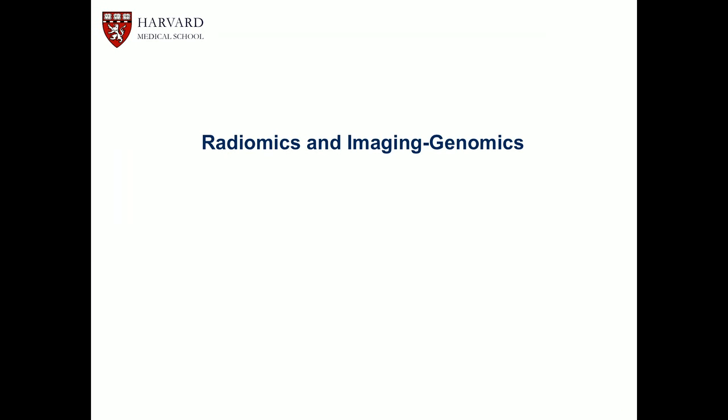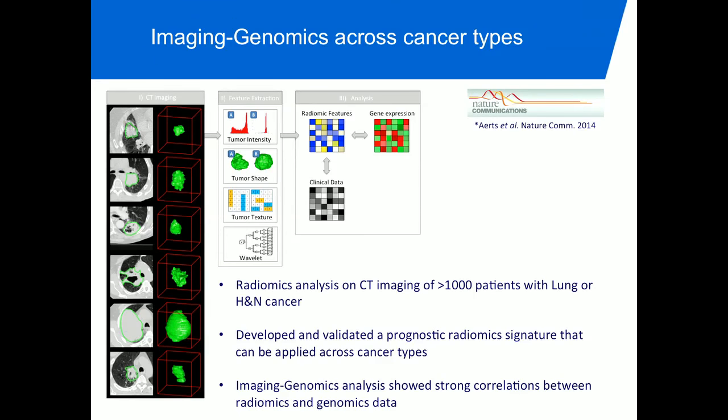Now I want to show some radiomics and imaging genomics studies. One study we published in Nature Communications two years ago used radiomics analysis — imaging, feature extraction, and correlation of radiomics data with gene expression and clinical data. We performed this on 1,000 patients with lung and head-and-neck cancer — more advanced stages treated with radiotherapy, not a diagnostic cohort.